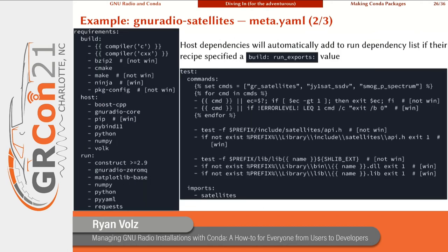The next section in the `meta.yaml` file is the list of requirements, divided into build, host, and run environments. You can see we use selectors to specify different requirements for different operating systems. It's important to note that host dependencies can automatically add to the run dependency list if their recipe specifies a special value in its own `build/run_exports` section. After requirements comes the test section, where you run different commands — if any fail, the tests fail — typically checking that executables run correctly or that certain files exist within the packaged tarball.